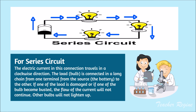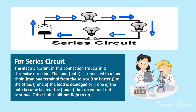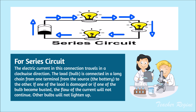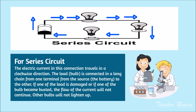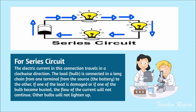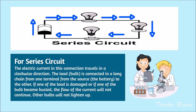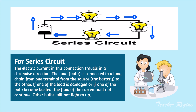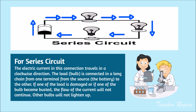For a series circuit, the electric current in this connection travels in a clockwise direction. The load, which is the bulb, is connected in a long chain from one terminal of the source — the battery — to the other. If one of the loads is damaged, or if one of the bulbs becomes busted, the flow of the current will not continue and the other bulbs will not light up.